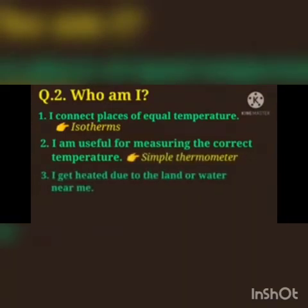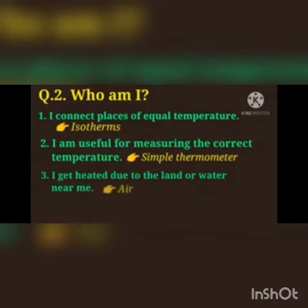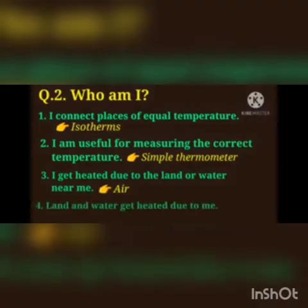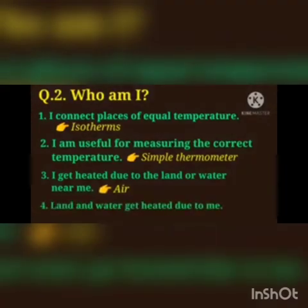Third one: I get heated due to the land or water near me. Answer is air. Fourth one: land and water get heated due to me. Answer is sun.